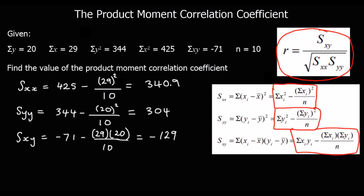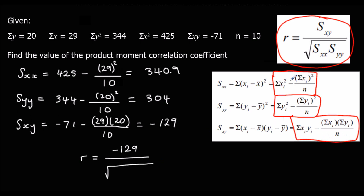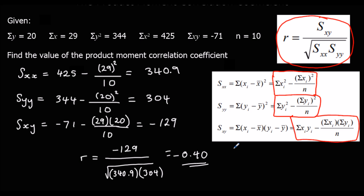Now we can work out r by substituting into the formula. So r is Sxy, which is negative 129, over the square root of Sxx (340.9) times Syy (304). Typing this into the calculator, to two decimal places we get minus 0.40. So this is a negative correlation — as x increases, y will decrease.